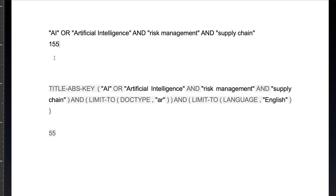I further used quality assessment criteria in order to remove irrelevant records. I used only research articles, so I excluded all conference papers, non-published articles, editorials, and review methods. I also used only English language articles, excluding those in other languages. Finally, I received 55 research articles.